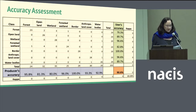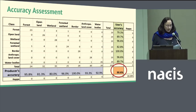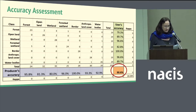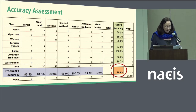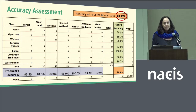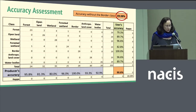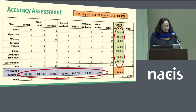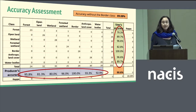Here is the confusion matrix generated for the accuracy assessment. The result is that the overall accuracy of the analysis is 90.6%. If we remove the border class, which was just the edge of the map and predictably had an accuracy of 100%, we get an accuracy of 89.08%. The accuracy varies from one class to another, but it remains more or less between 80 and 96%. These are actually good results for that type of analysis.